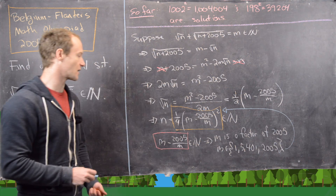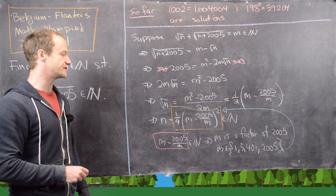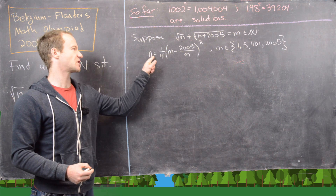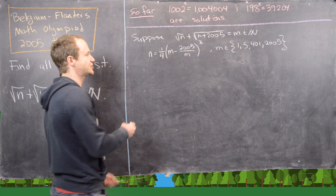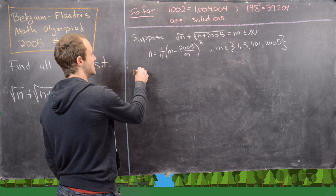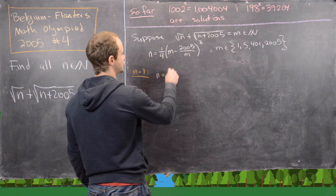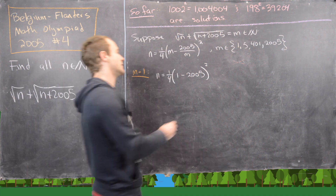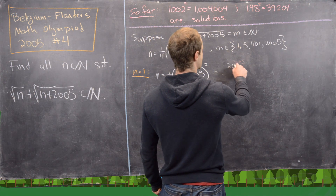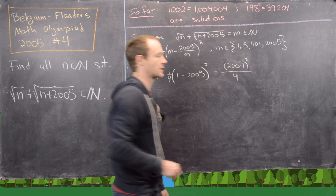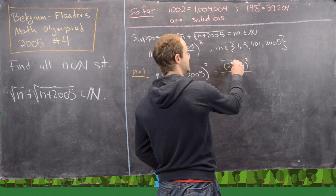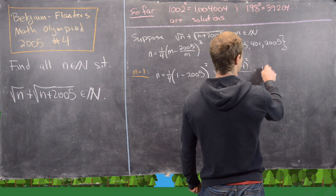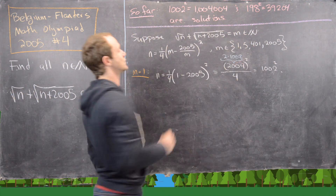Let's verify by plugging each value back in. For m = 1: n = ¼ · (1 - 2005)² = 2004² / 4. Factoring 2004 = 2 × 1002, we get (2 × 1002)² / 4 = 4 × 1002² / 4 = 1002². That's one of our solutions already.